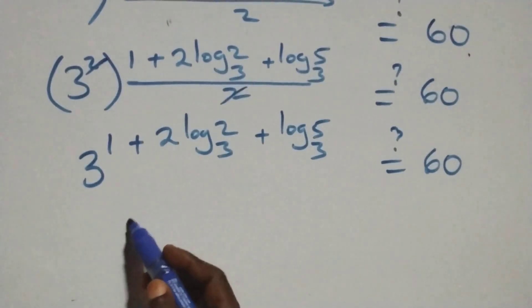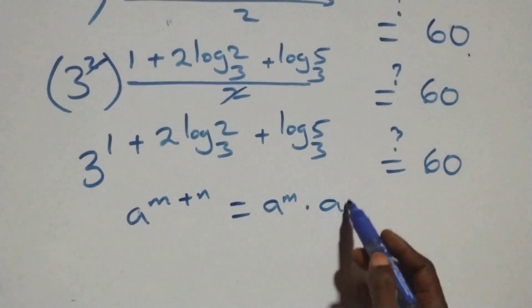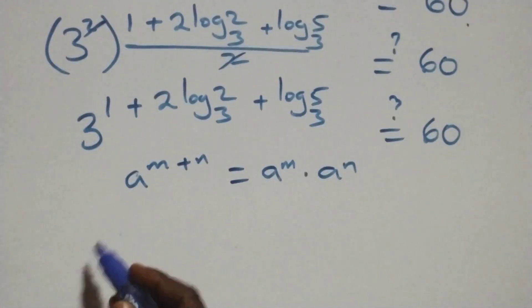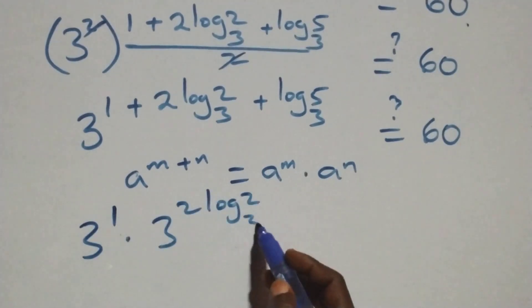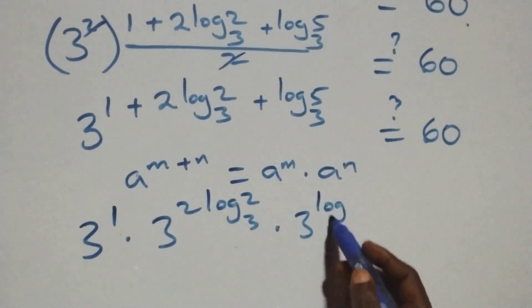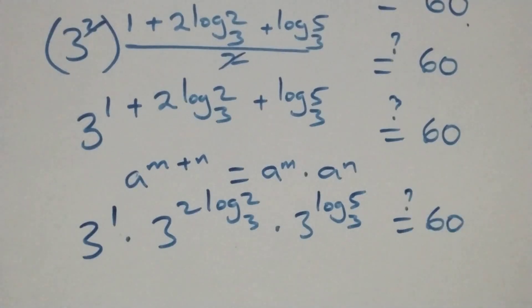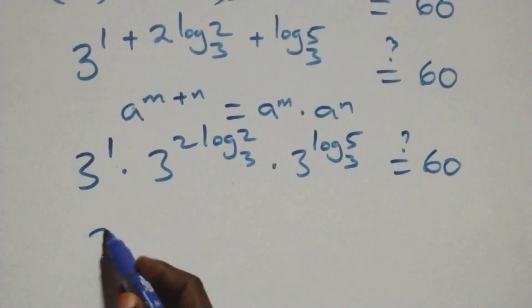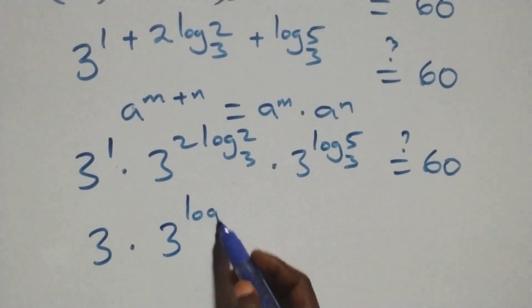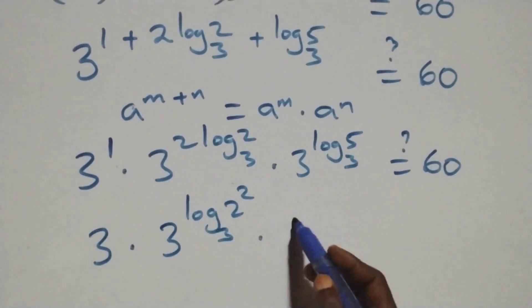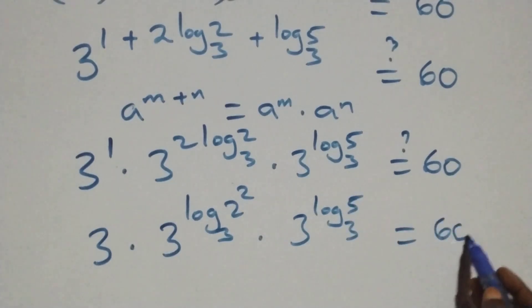This follows the law of indices: a raised to the power m plus n equals a raised to m times a raised to n. So this becomes 3 raised to power 1, times 3 raised to power 2·log₃2, times 3 raised to power log₃5, equals 60. Then 3 raised to power 1 is 3, and bringing the 2 back into the logarithm argument gives 3 times 3 raised to power log₃(2²), which is 3 raised to power log₃4, times 3 raised to power log₃5, equals 60.